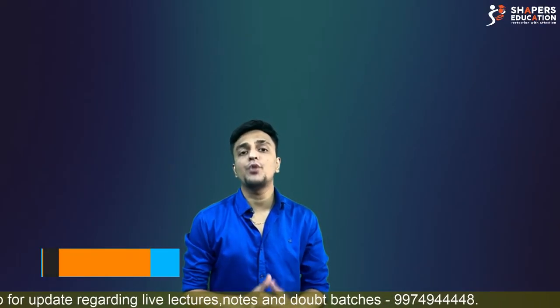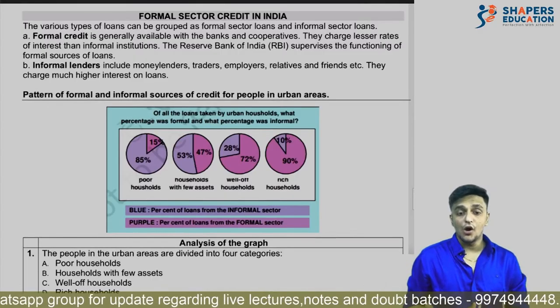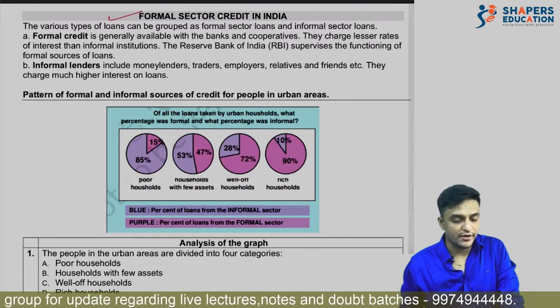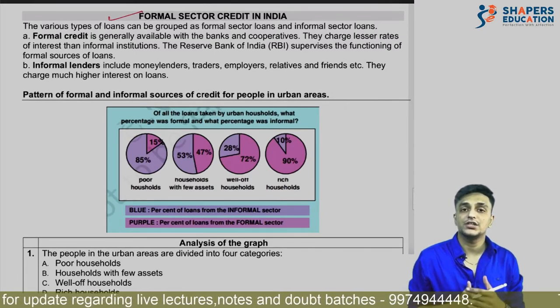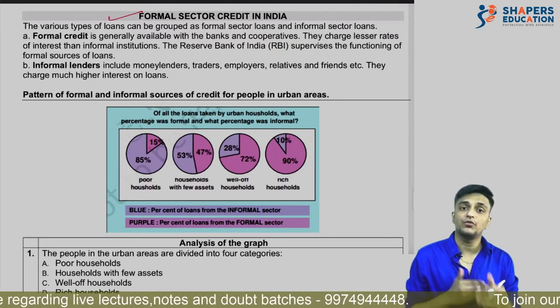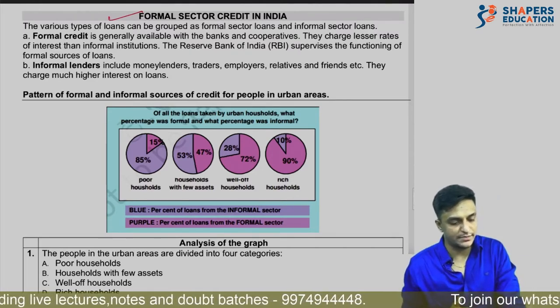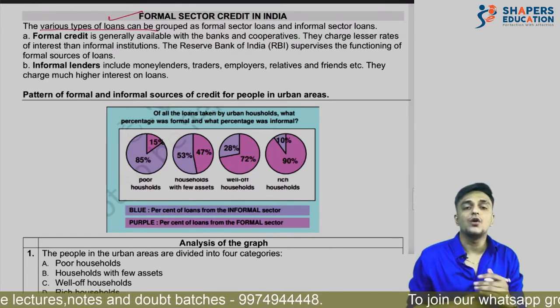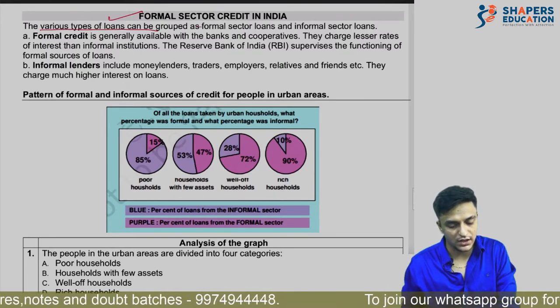This is Part 2 of Money and Credit. In Part 1, we covered important topics like loan activities of banks, sources of income, and different parts of the system. In this part, we will see different topics like self-help groups, classification of credit, and loan sector divisions. There are many types of loans — we classify them into the formal sector and informal sector.